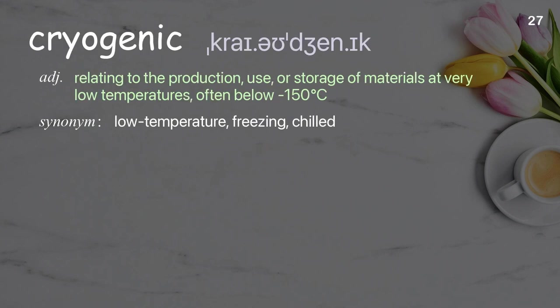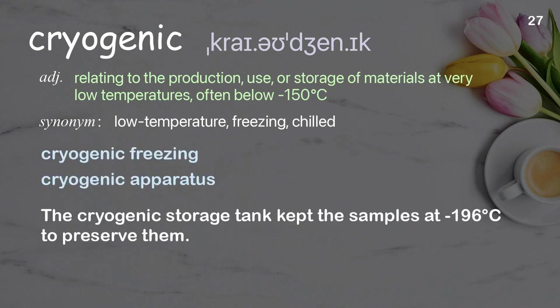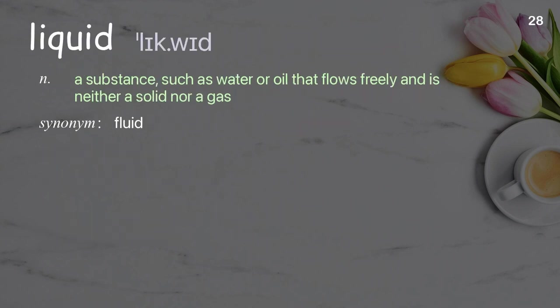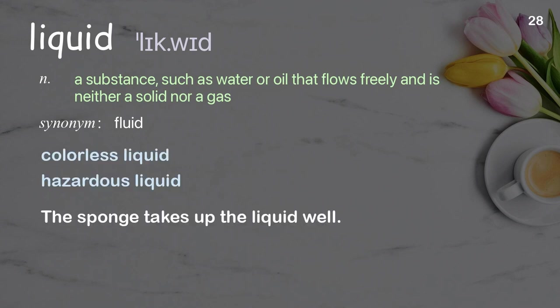Cryogenic: relating to the production, use, or storage of materials at very low temperatures, often below minus 150 degrees Celsius. Examples: cryogenic freezing, cryogenic apparatus. The cryogenic storage tank kept the samples at minus 196 degrees Celsius to preserve them. Liquid: a substance such as water or oil that flows freely and is neither a solid nor a gas. Examples: colorless liquid, hazardous liquid. The sponge takes up the liquid well.